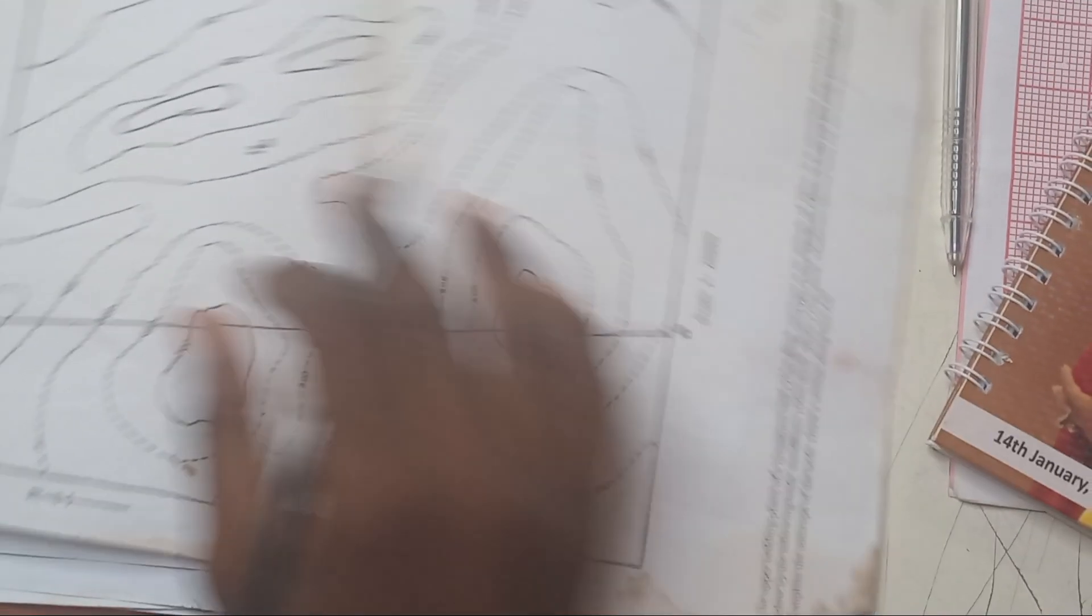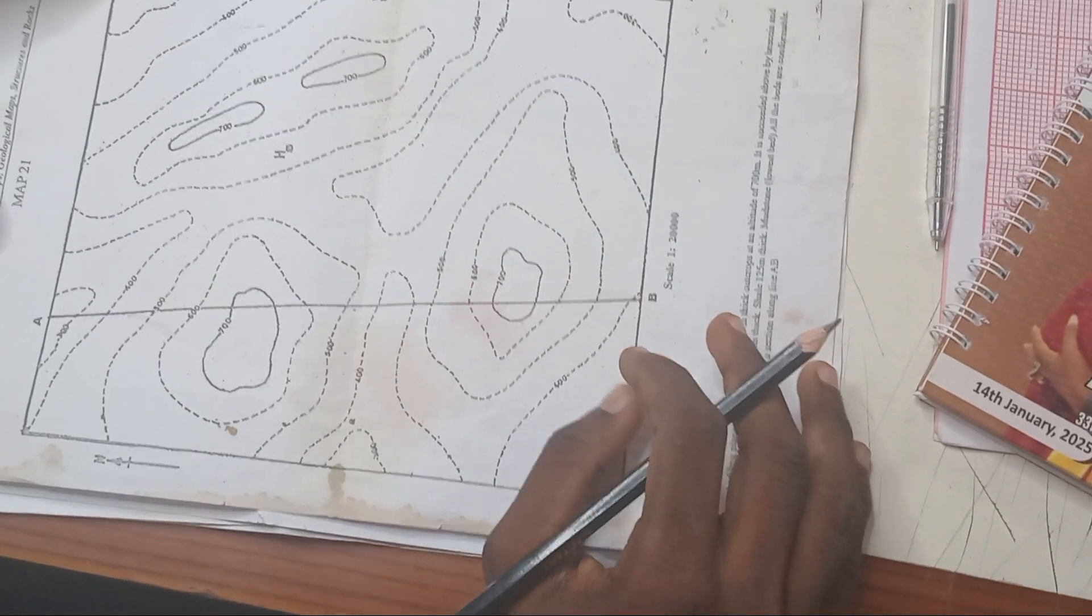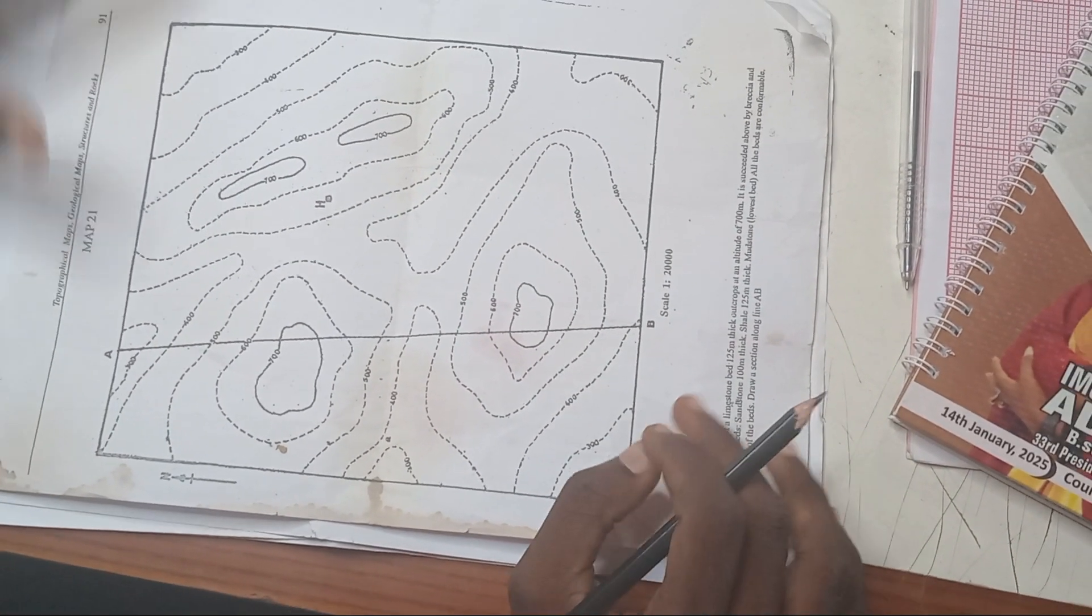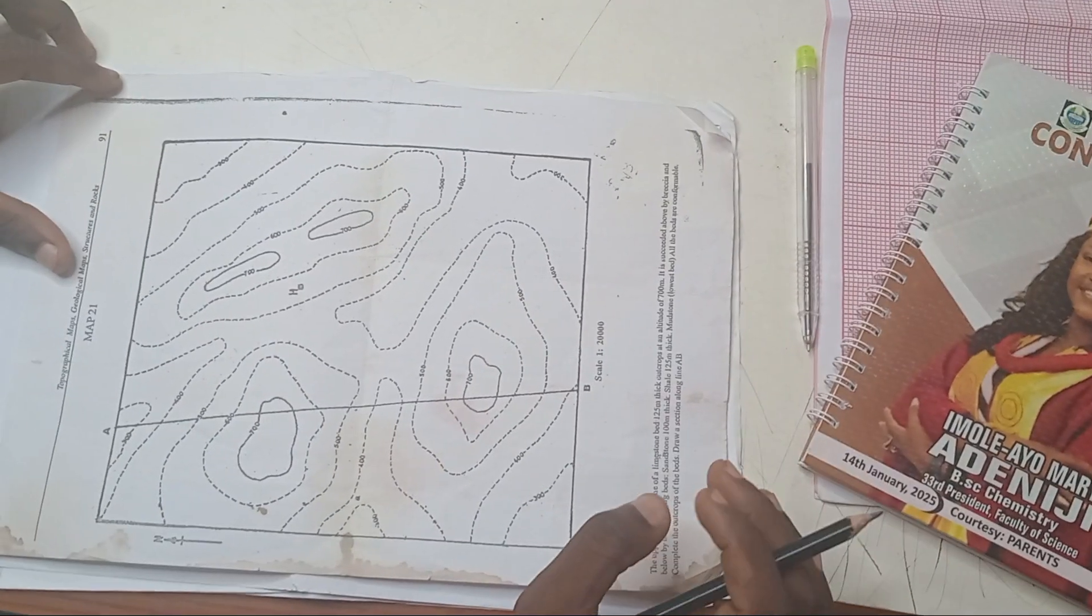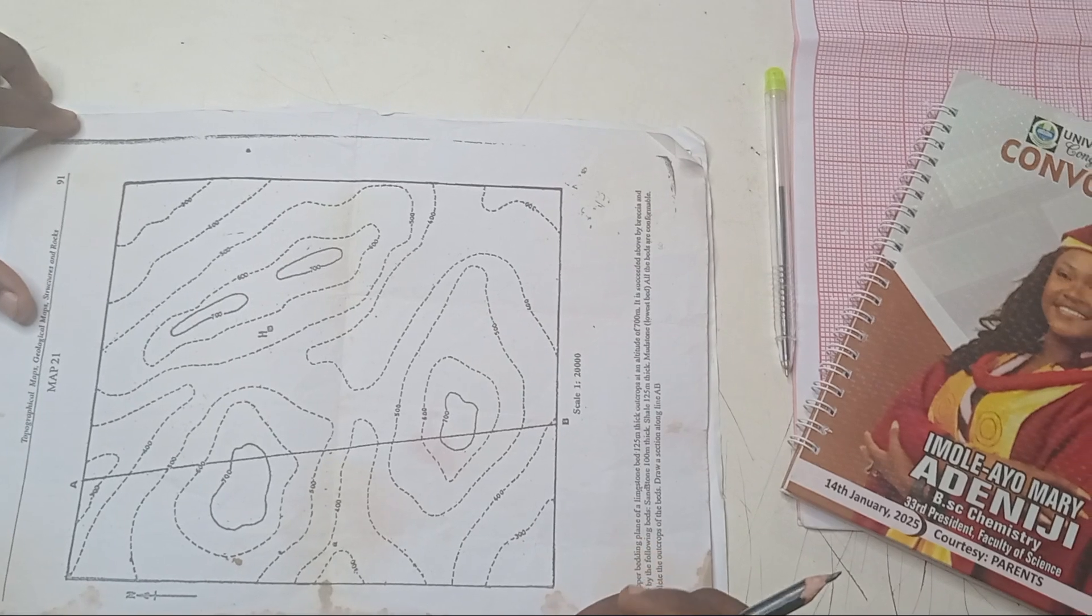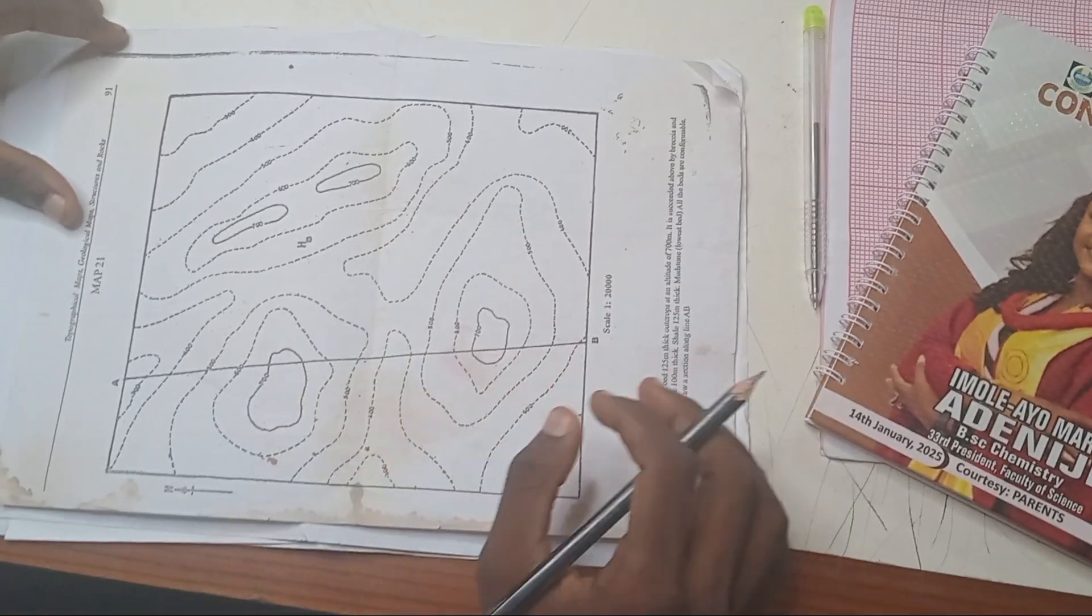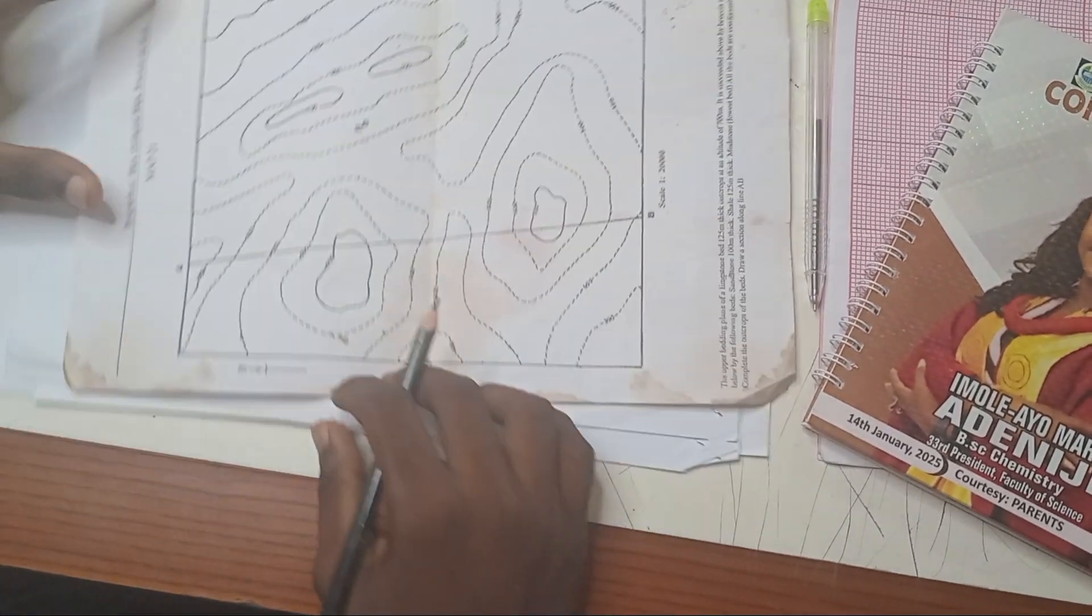So journey with me as we convert this topological map to a geological map. Why do we say a geological map? In a geological map, we have legends on it, which means we have the bed on it and things that denote it. So let's start.